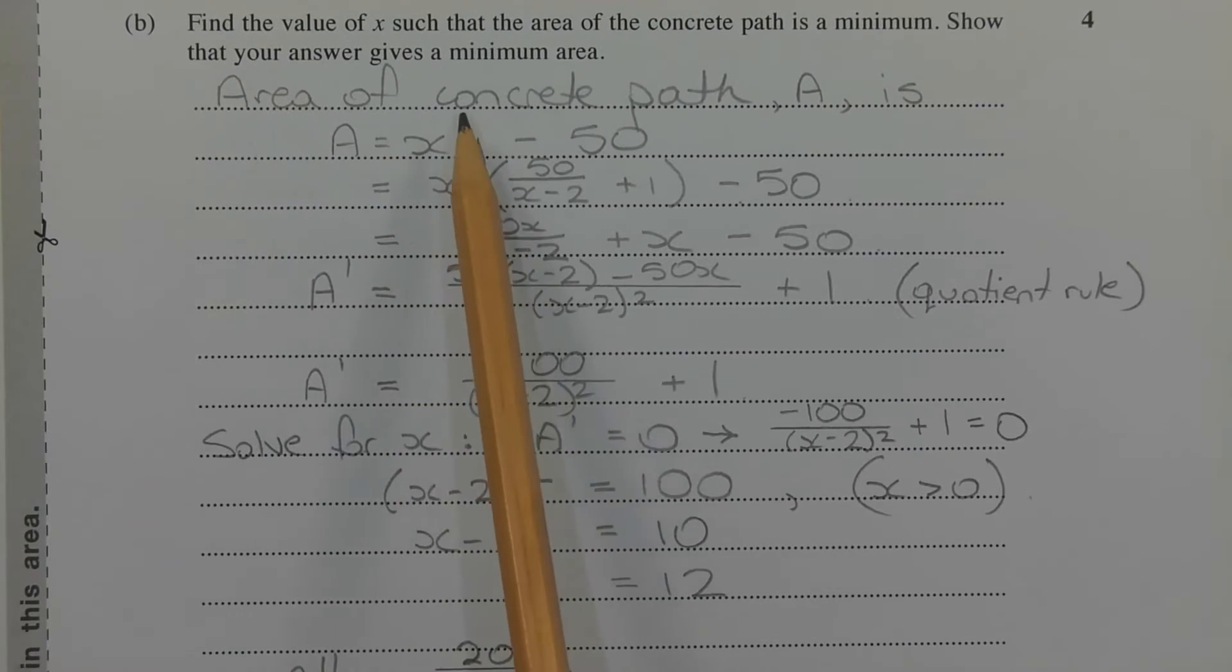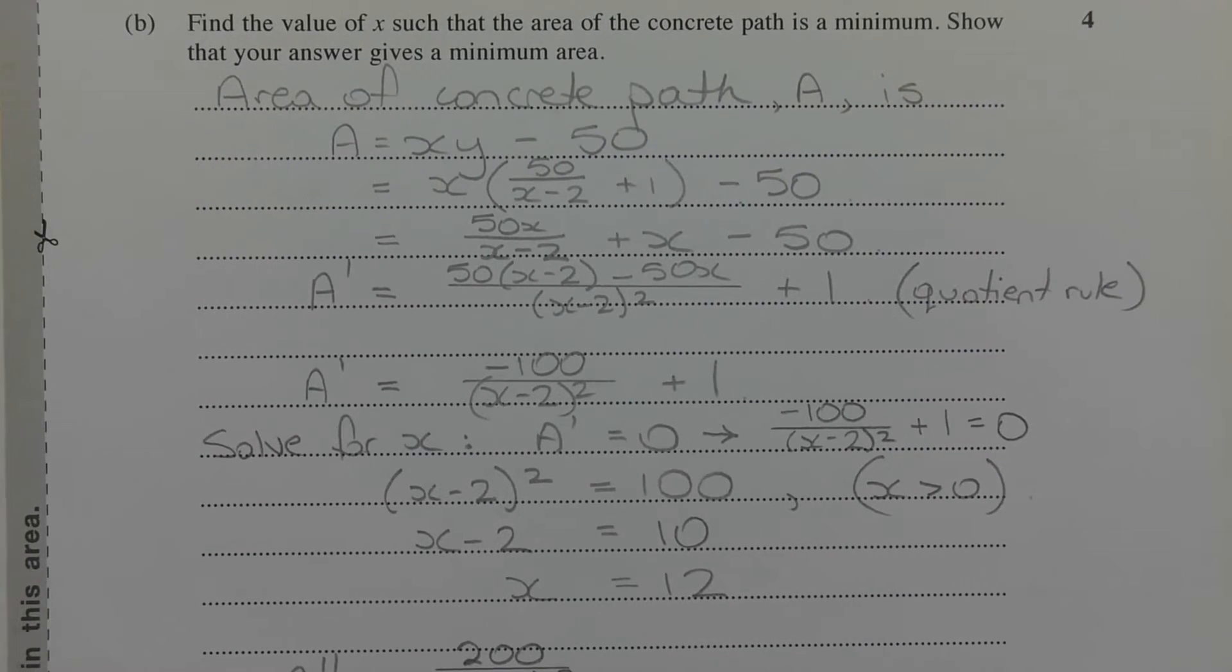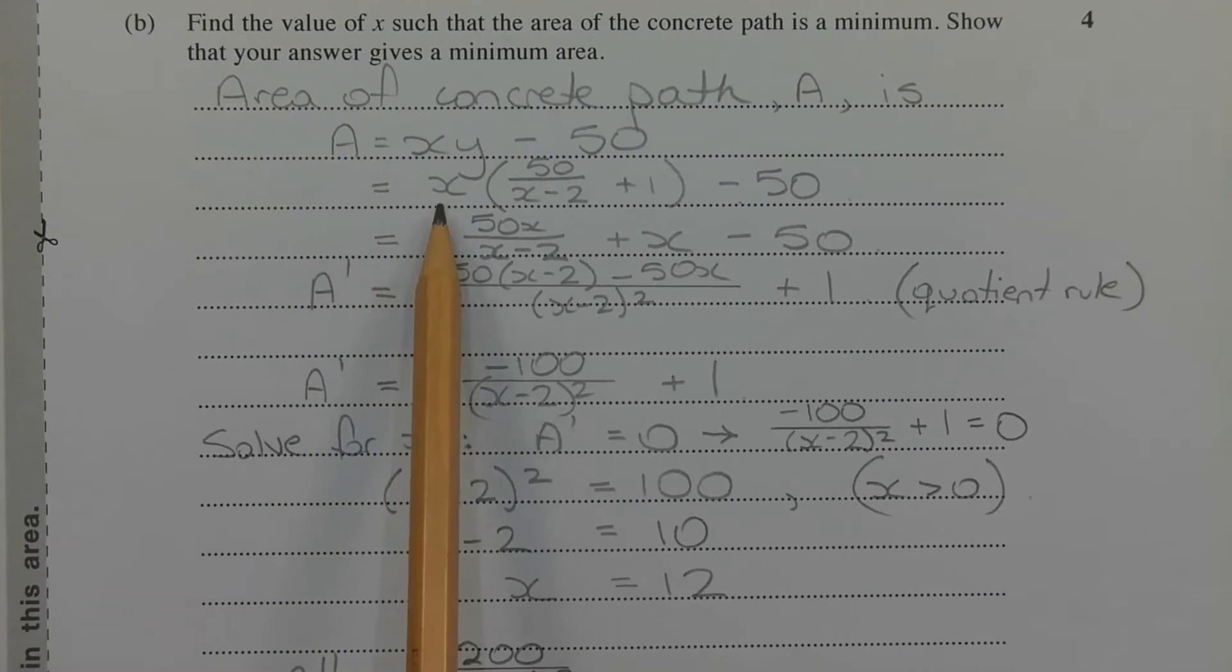So we can eliminate the y variable by using what we know from part A, which is y equals 50 over x minus 2 plus 1. So substituting that for y here, we get A is equal to x times 50 over x minus 2 plus 1 in brackets minus 50.